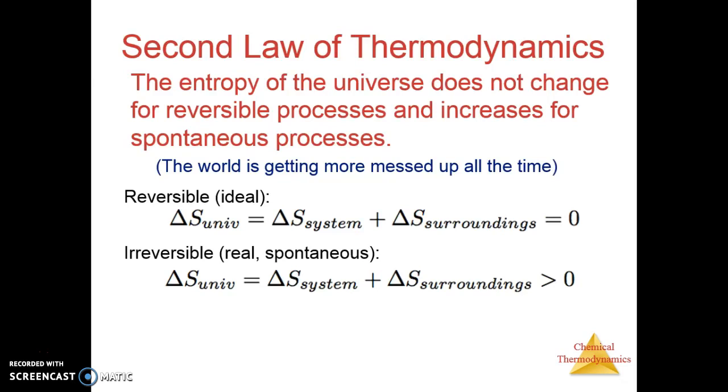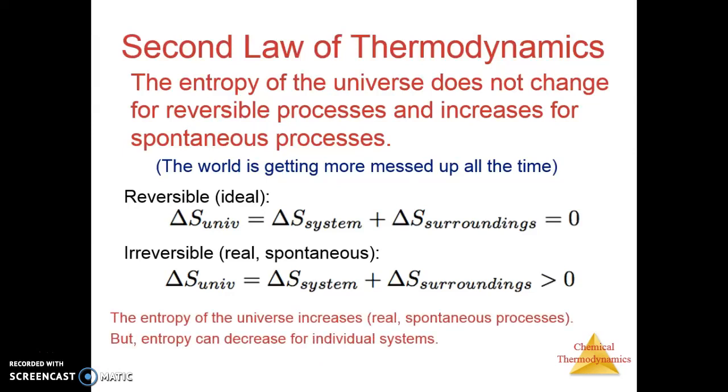In the real world, for processes that are irreversible, which is what happens most of the time, you actually get an increase in the entropy in a real or spontaneous process. The entropy of the universe increases, but entropy can decrease for individual systems. The system may decrease in entropy, but that just means there's some sort of spontaneous process somewhere else for which entropy is happening at a more positive value.